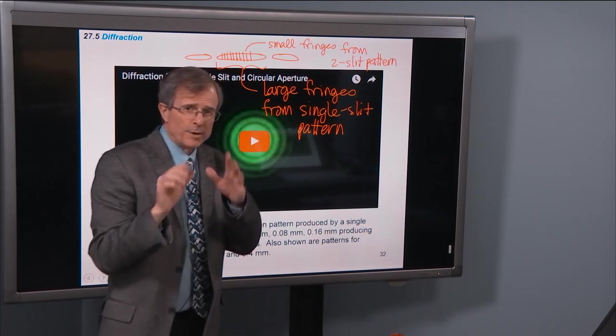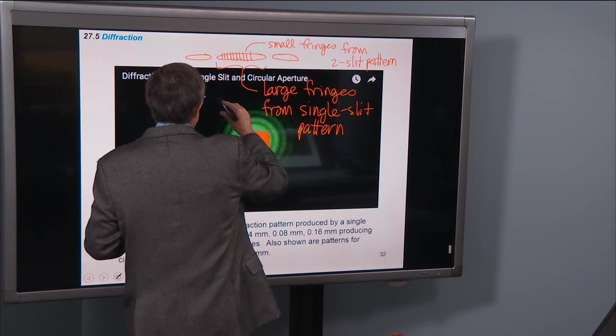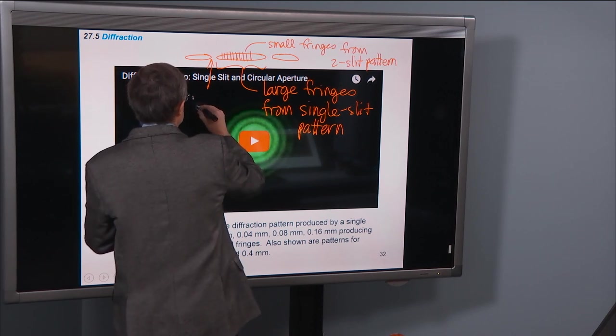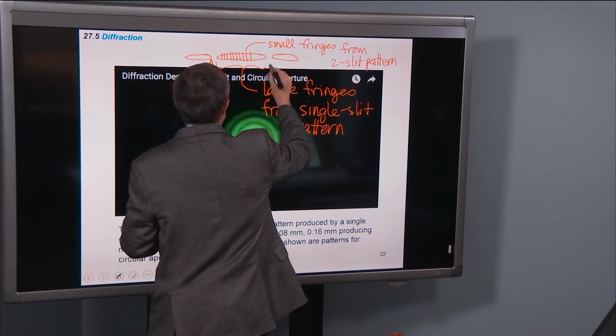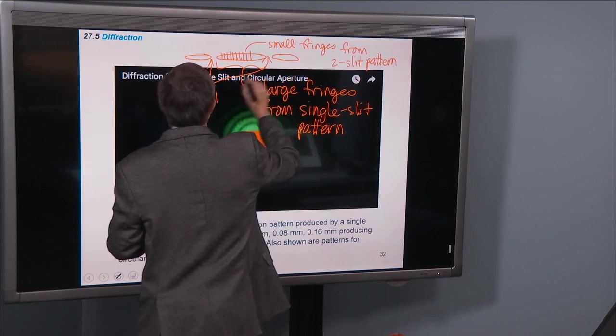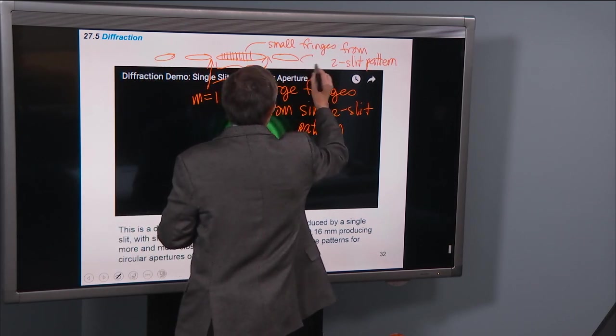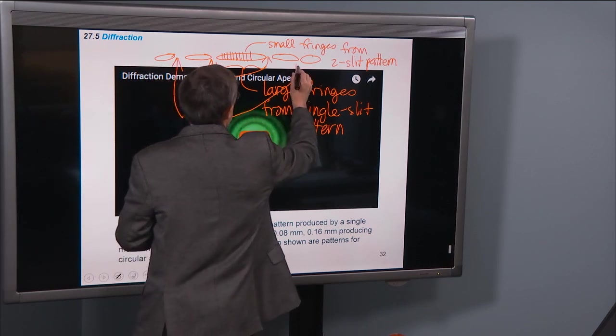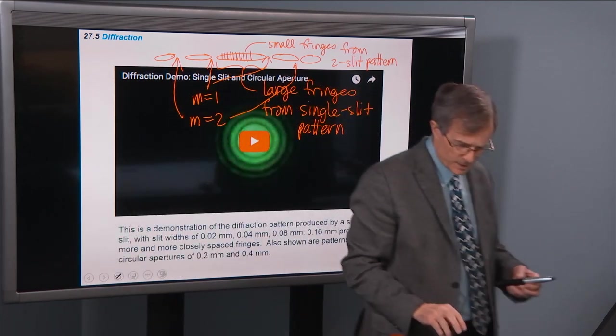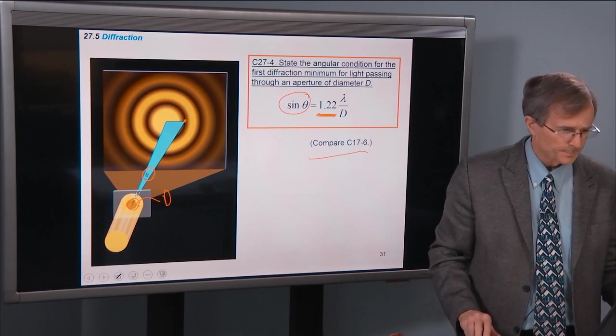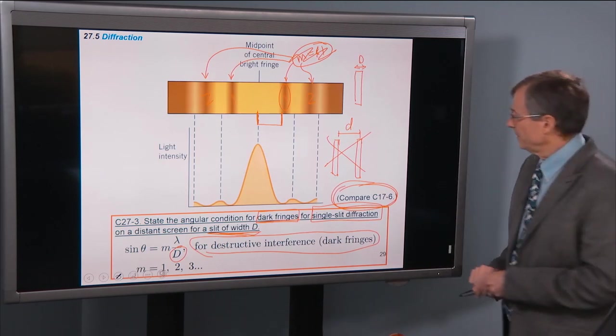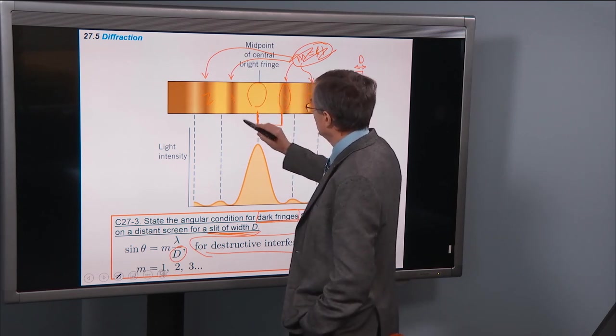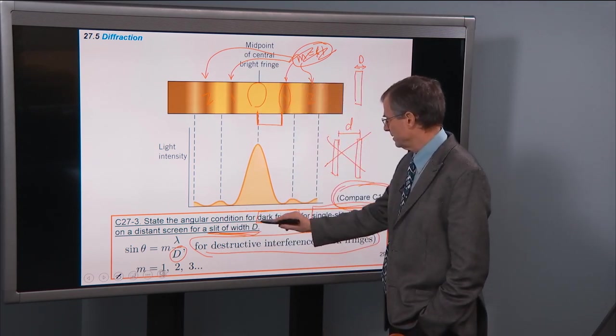So in the very first part of the demo we had, I didn't really talk about this in the demo, but this was a dark fringe, the m equals 1 dark fringe here and here. And then m equals 2 here and here.